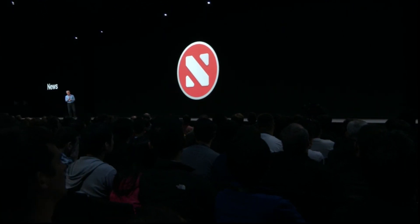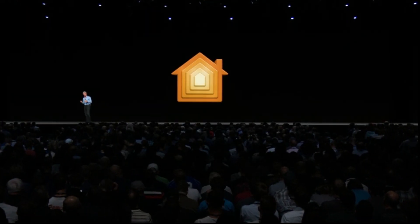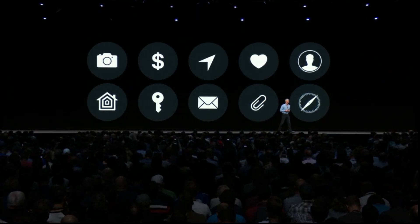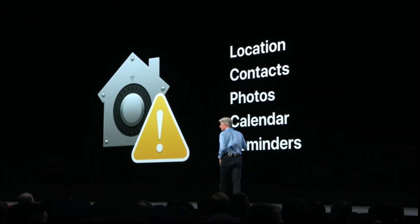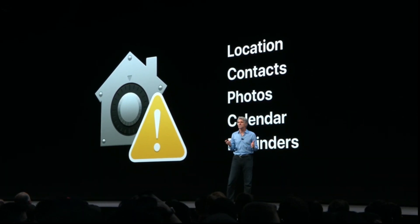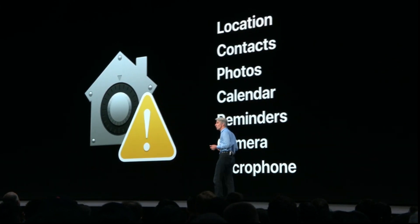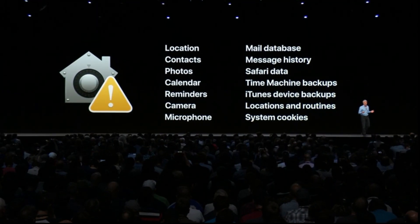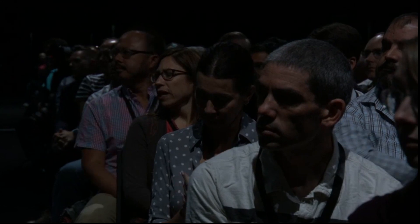We are bringing News, Stocks, Voice Memos, and Home to the Mac. We also believe your private data should remain private. macOS Mojave extends API-level protections to include your camera and microphone, and protects sensitive parts of your file system like your mail database, message history, and backups — all protected by default for any app on the system.